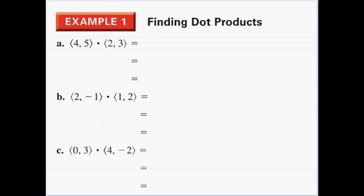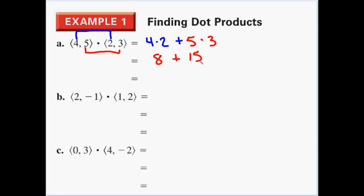Example one — just find some dot products. For the first one, we've got two vectors dotted. We multiply four times two, and then add to that five times three. Four times two is eight, five times three is fifteen. Adding them up, you get the dot product: twenty-three.